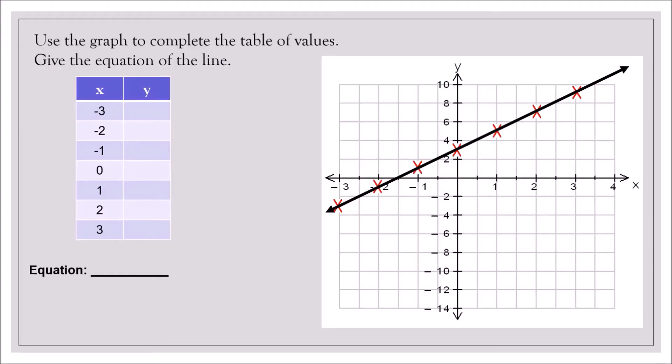Use the graph to complete the table of values and give the equation of the line. So this is working backwards. We are given the graph and we have to find the numbers on our table and write the equation of the line. So let's start with the leftmost point. When x is negative 3, y is also negative 3.